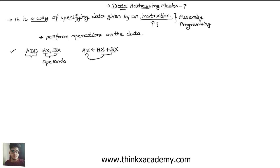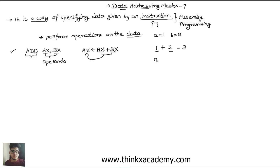This is a general form of how an instruction looks — it performs operations on data. There are various ways to specify data. For example, consider the simple operation 1 plus 2, where 1 and 2 are the operands and plus is the operator. Here 1 and 2 are direct, immediate data that gives output 3.